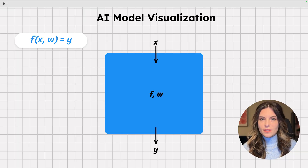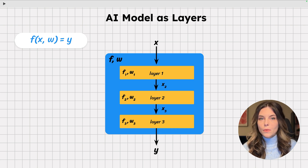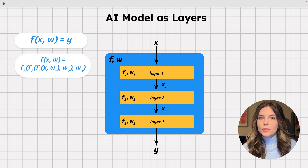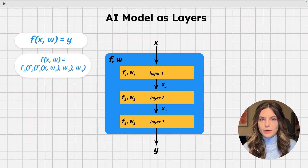While an AI model can be expressed as a closed-form mathematical function, it can also be viewed as a box where data flows from top to bottom. Most AI models are a sequence of layers where every layer is a function with its own weights, and the output of one layer becomes the input to the next layer. So the original function f is simply a composition of functions f1, f2, and f3.